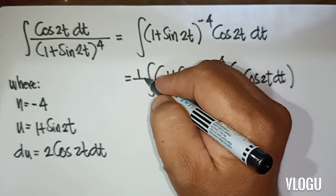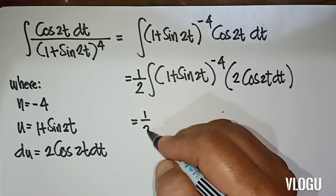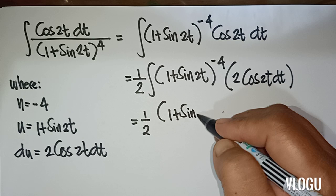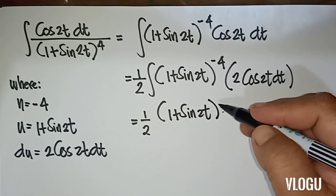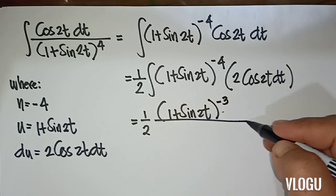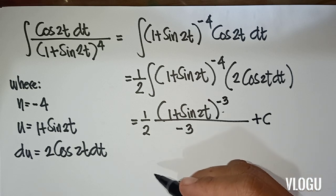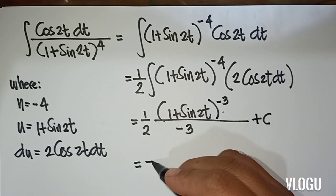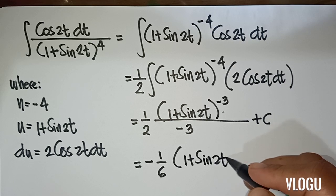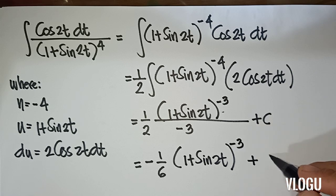We multiply 2, so we bring in 1 half outside. We then have 1 half times (1 plus sine 2t) raised to negative 4 plus 1, which is negative 3, over negative 3, plus C. The final answer is negative 1 over 6 times (1 plus sine 2t) raised to negative 3, plus C.